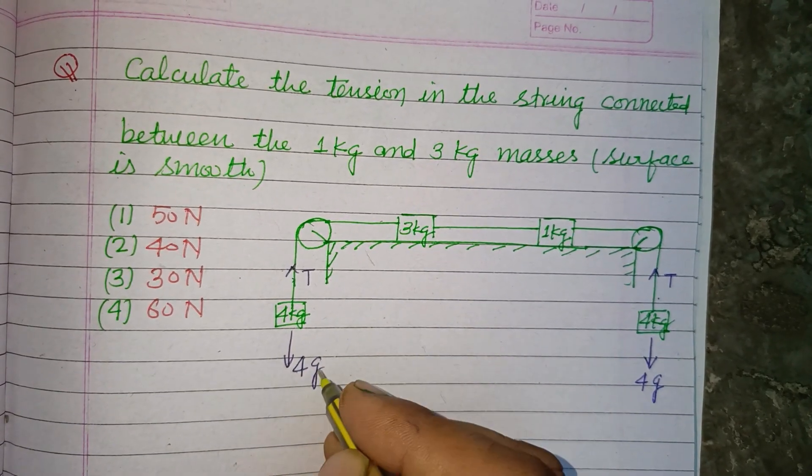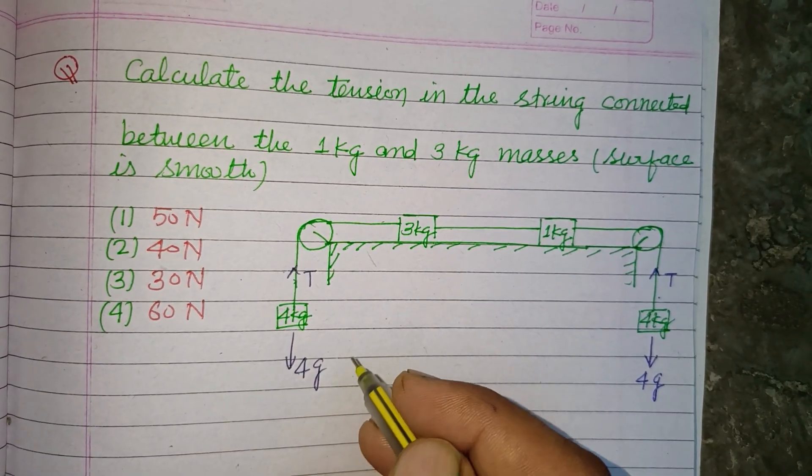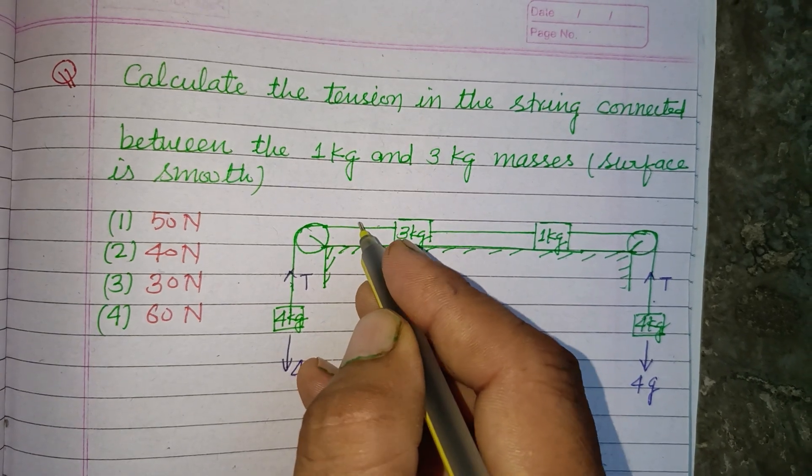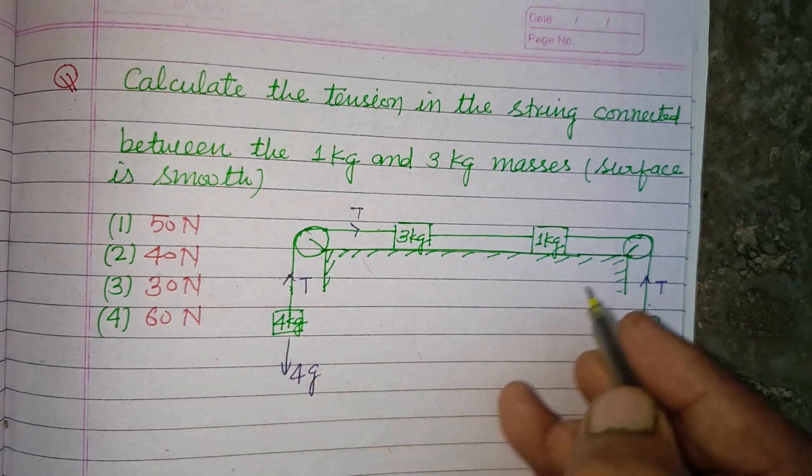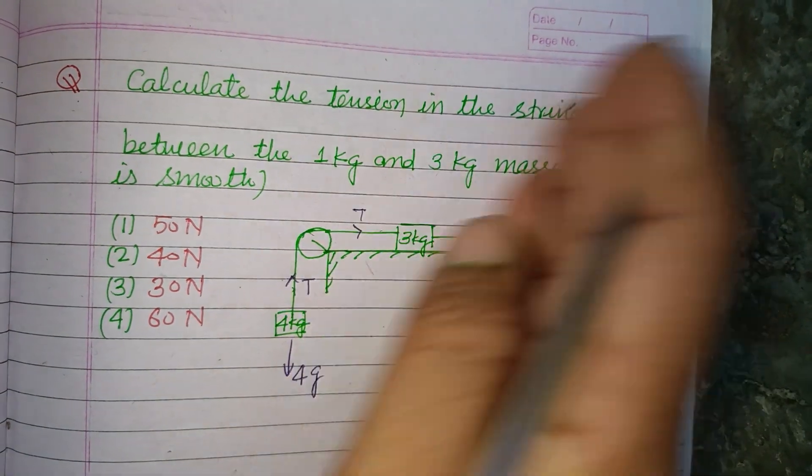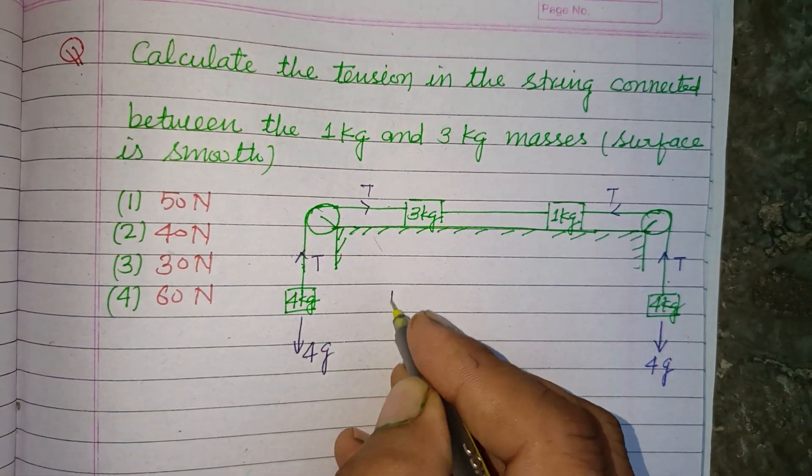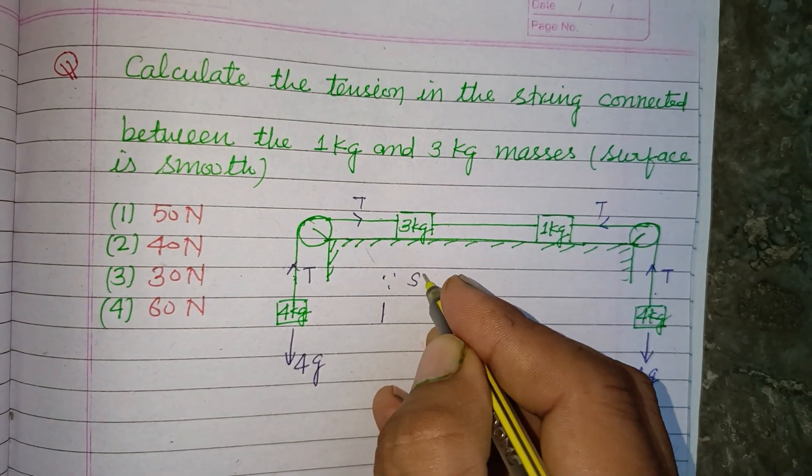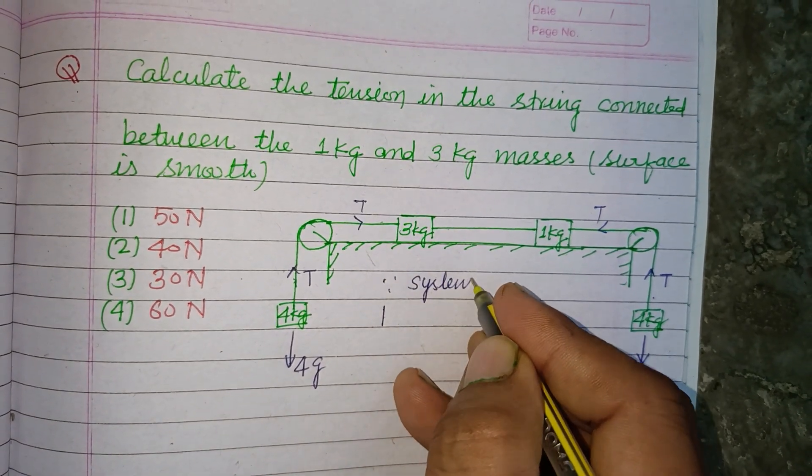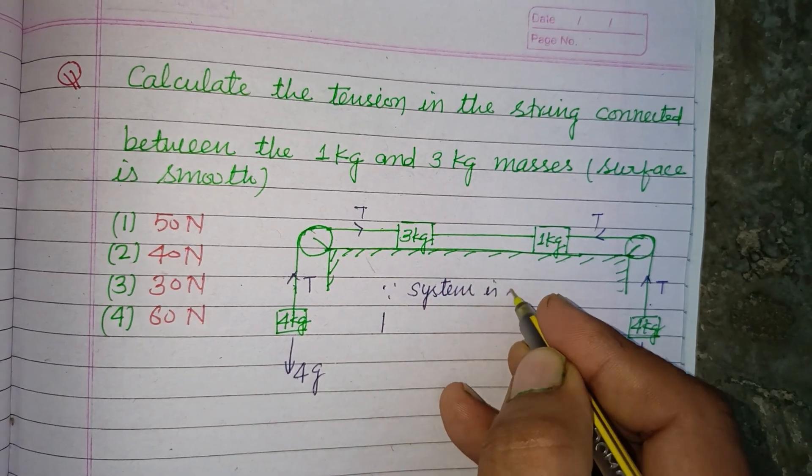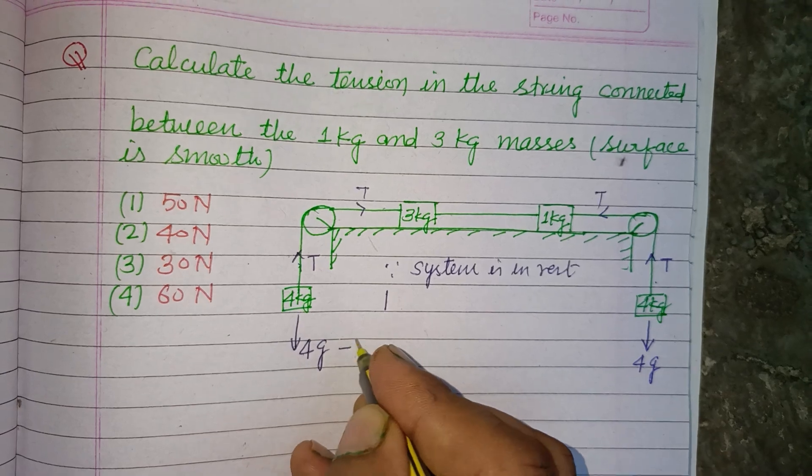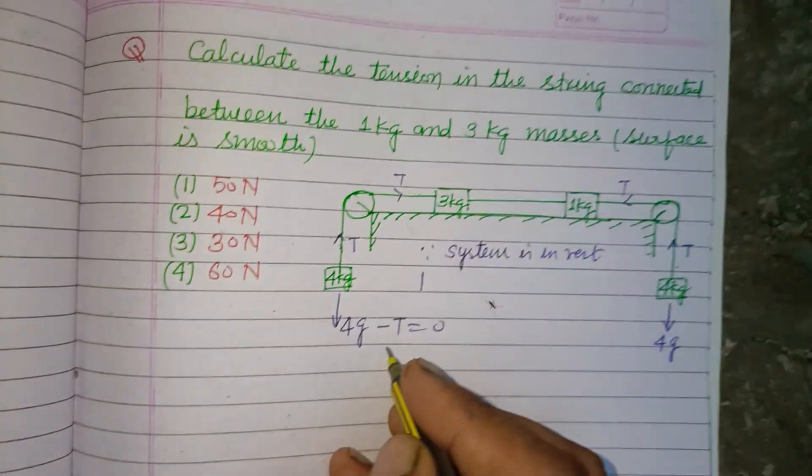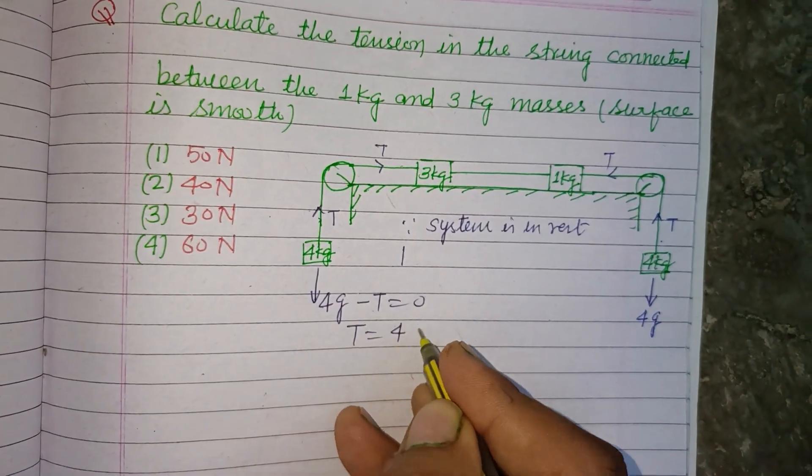Because tension depends on the weight, and this is also T. Okay, so since the system is in equilibrium, the system is in rest. So 4g minus T equals 0, therefore T equals 4g.